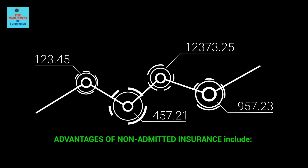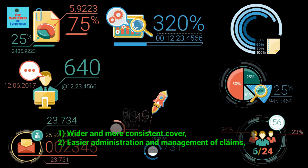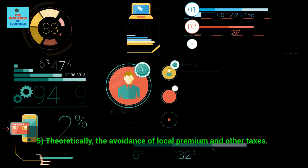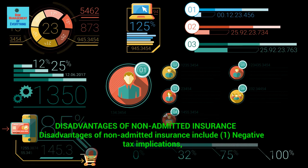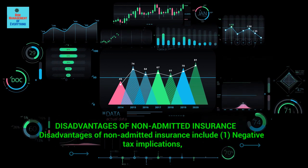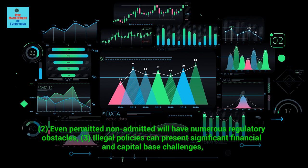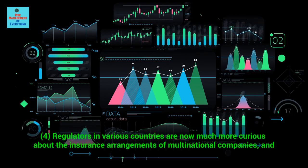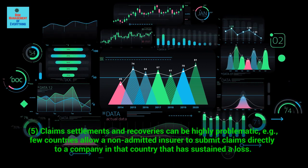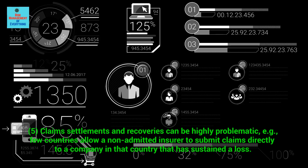Advantages of non-admitted insurance include: 1. Wider and more consistent cover. 2. Easier administration and management of claims. 3. No language, interpretation, and currency problems. 4. Known jurisdiction. 5. Theoretically, the avoidance of local premium and other taxes. Disadvantages of non-admitted insurance include: 1. Negative tax implications. 2. Even permitted non-admitted will have numerous regulatory obstacles. 3. Illegal policies can present significant financial and capital-based challenges. 4. Regulators in various countries are now much more curious about the insurance arrangements of multinational companies. 5. Claims settlements and recoveries can be highly problematic — few countries allow a non-admitted insurer to submit claims directly to a company in that country that has sustained a loss.